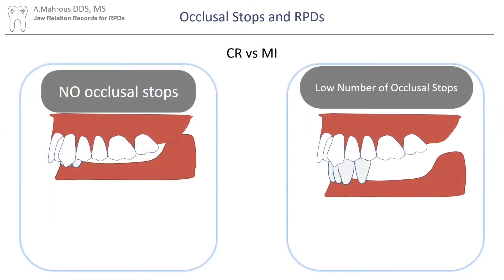In RPD treatment, you'll find that you'll frequently be faced with situations where you're either going to have a low number of occlusal stops, or no occlusal stops at all. As a general rule of thumb, whenever you have an occlusal contact, you're going to use an MI position as your final occlusal position. And if you have no occlusal stops, you'll revert to CR as your occlusal position.